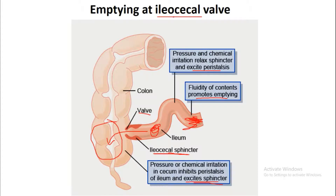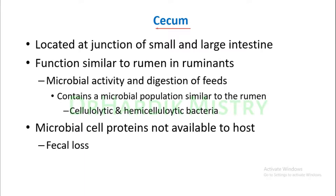The cecum is located at the junction of the small and large intestine. Its function is similar to the rumen in ruminants — it has microbial activity and digestion of feeds. It contains a microbial population similar to the rumen, with cellulolytic and hemicellulolytic bacteria. However, the microbial cell proteins are not available to the host and are lost in the feces.